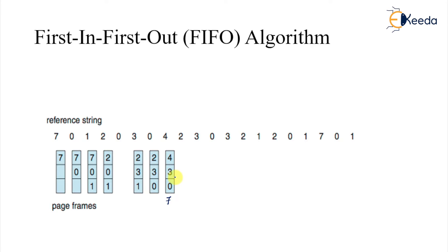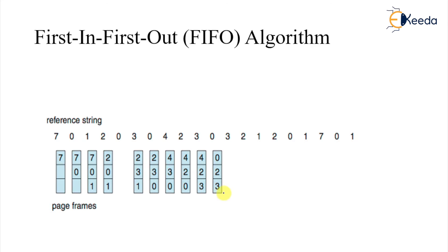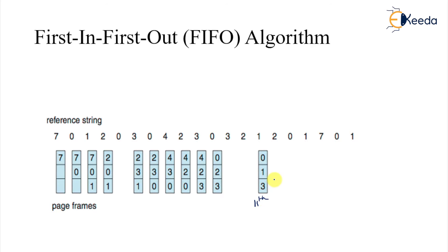Two comes next and replaces three — that is the eighth page fault. Then three comes and replaces zero — ninth page fault. Zero comes and replaces four — tenth page fault. Three is a hit, two is a hit — both are hits. When one comes, two will be gone — that is the eleventh page fault. Then two replaces three — twelfth page fault.